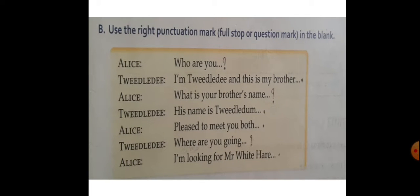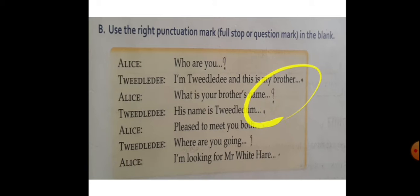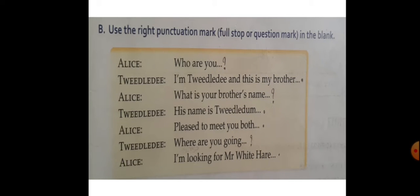Exercise B: Use the right punctuation mark — full stop or question mark — in the blank. Alice: Who are you? — question mark. Tweedledee: I am Tweedledee and this is my brother. Alice: What is your brother's name? — question mark. Tweedledee: His name is Tweedledee. देखो, अगर question है तो question mark, और अगर sentence है तो full stop — बहुत easy है।